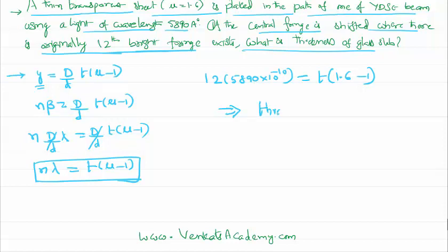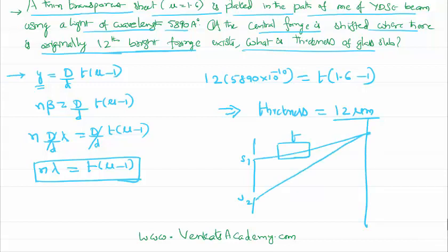That means in the path of the beams, a slab of thickness 12 micrometers was placed. Because of this, the central bright fringe was shifted from the original position to this new position, which is 12 times β.